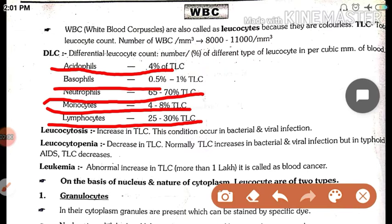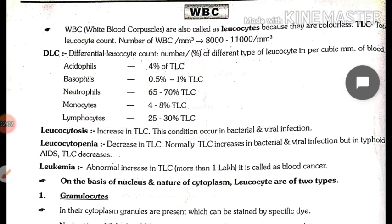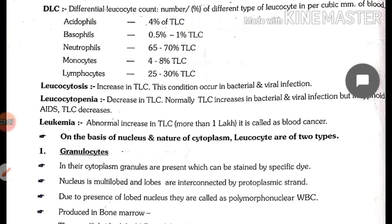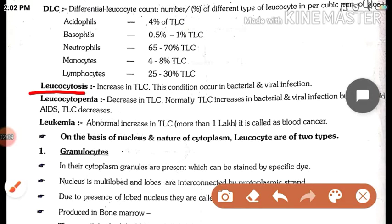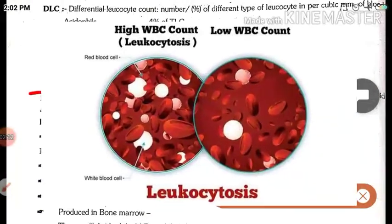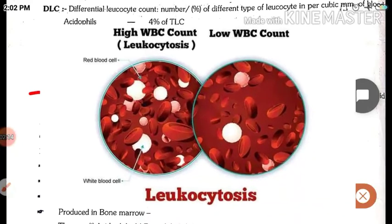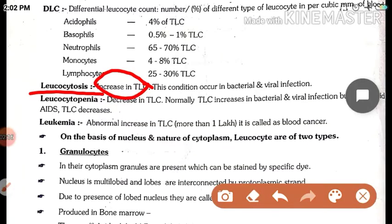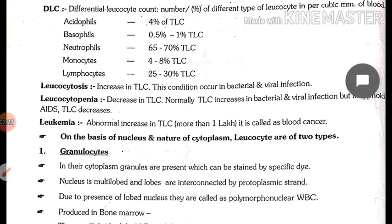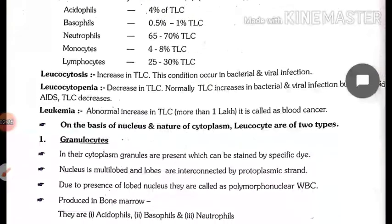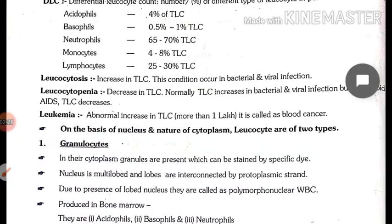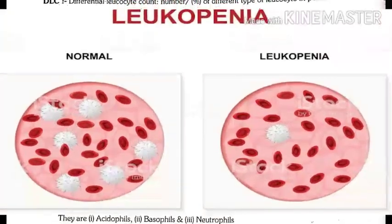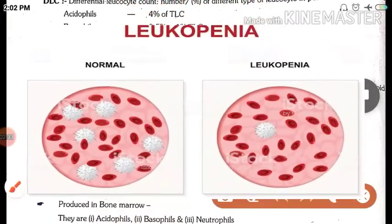Total TLC mein sabse zyada neutrophils pai jati hain. Leukocytosis kya hai? Leukocytosis means increase in TLC — jab total leukocytes badhh jaayein. This condition occurs in bacterial and viral infection. Jab bacterial and viral infection hota hai, us condition mein leukocytes badhh jaati hain — is kriya ko hum log leukocytosis bolte hain.